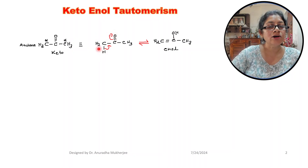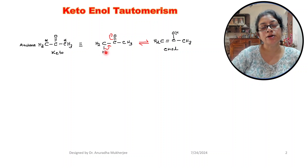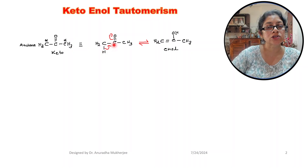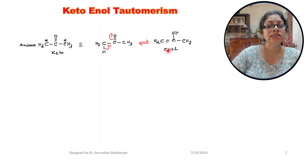Here we can see this carbonyl oxygen double bond — the pi electrons move towards the oxygen side, it becomes O minus. This hydrogen is acidic in nature because the carbonyl group is electron withdrawing. The bonding electrons then move to the positively charged carbon and we get a double bond here. So the double bond is in and OH, so it's an enol.